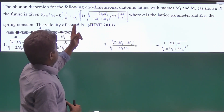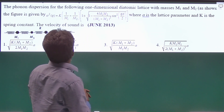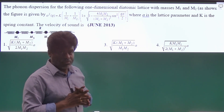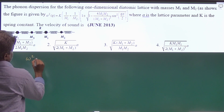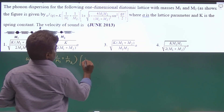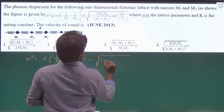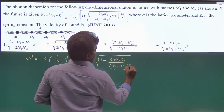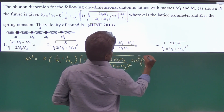In this question they have given a dispersion relation for a phonon spectrum and they are asking the velocity of sound. Here they have given a dispersion relation with plus or minus, and since they are asking velocity of sound for an acoustic branch we have to take the minus. So let me take omega squared equal to k times (1/m1 + 1/m2) minus root of 1 minus 4m1m2 by (m1+m2)² times sine squared (qa/2).